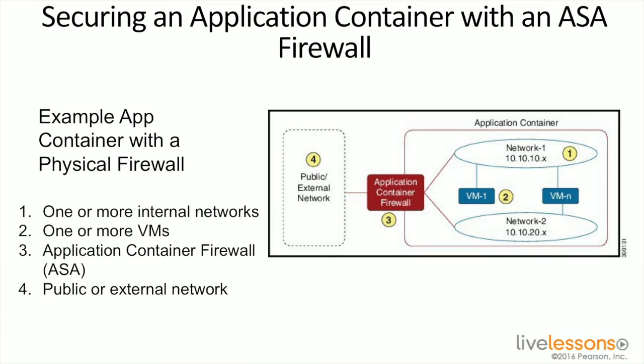You also have the application container firewall. In this case, that's an ASA. You're leveraging a physical piece of hardware so that you can use the ASA's configuration to provide that security function out to the public or external network. That gives you the ability to support this type of container in this scenario, and shows you how this would look within UCS Director.